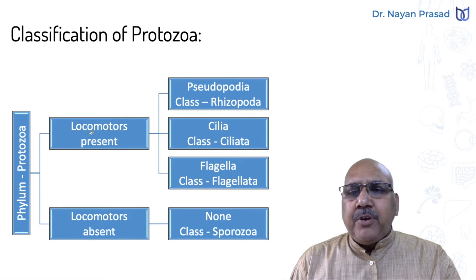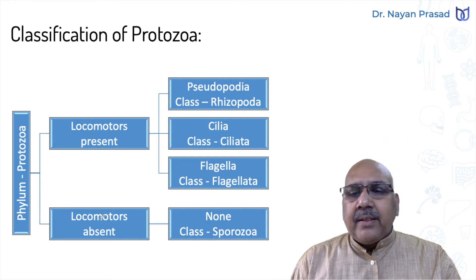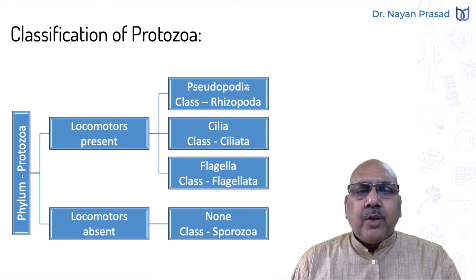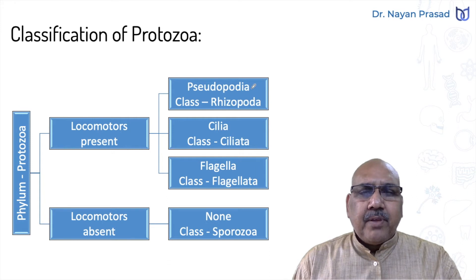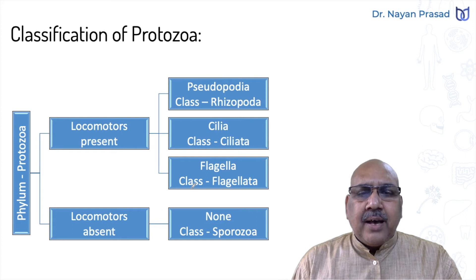Phylum protozoa can be divided into two groups: one with locomotory structures present, meaning the structures that help in locomotion, and another with locomotory structures absent. When present, the locomotory structures may be pseudopodia, cilia, or flagella. The group of organisms having pseudopodia as locomotory structures is called class Rhizopoda. Organisms having cilia are kept under class Ciliata, and organisms having flagella are under class Flagellata.